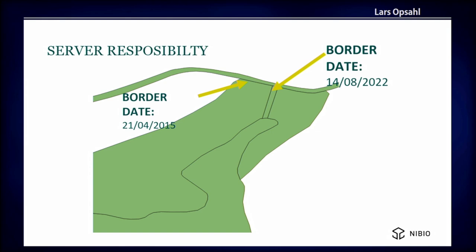If you push all this business logic onto the client and you have many different vendors, it will be wrong — because not every developer reads all the specifications when developing. If you look at the surfaces, this surface has not really changed because it's only the road that's new, so the date here is from 1999. That's correct. On the road, that's new, so that makes sense.